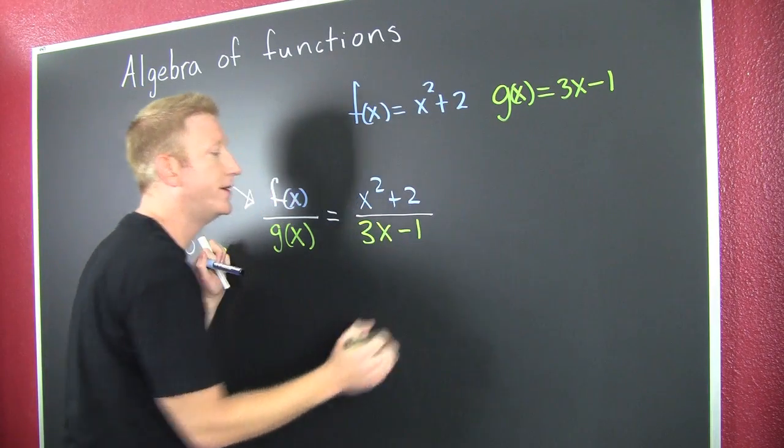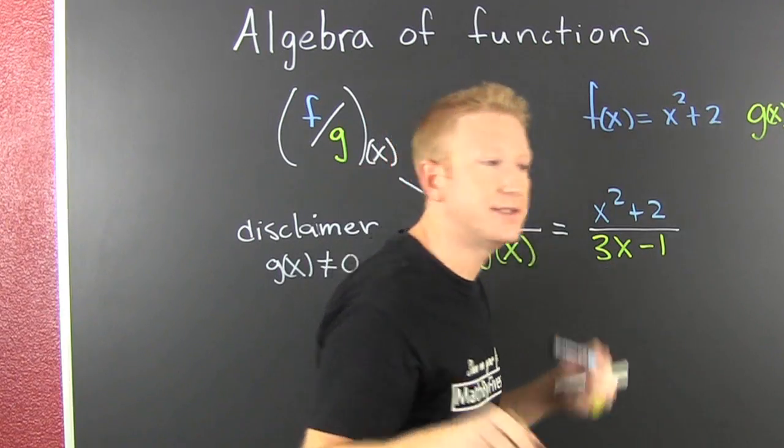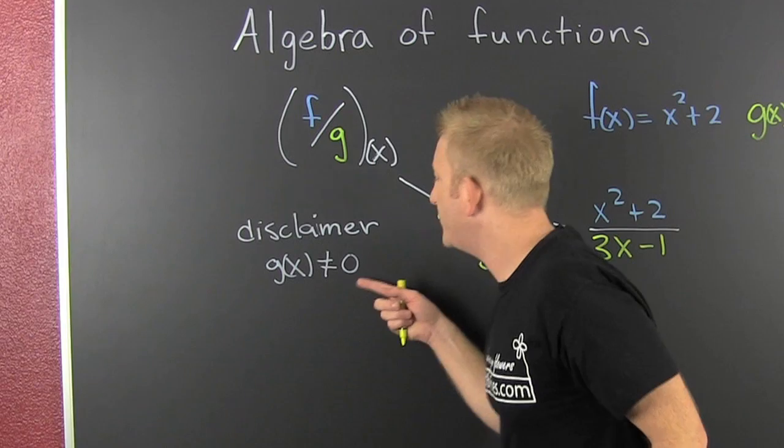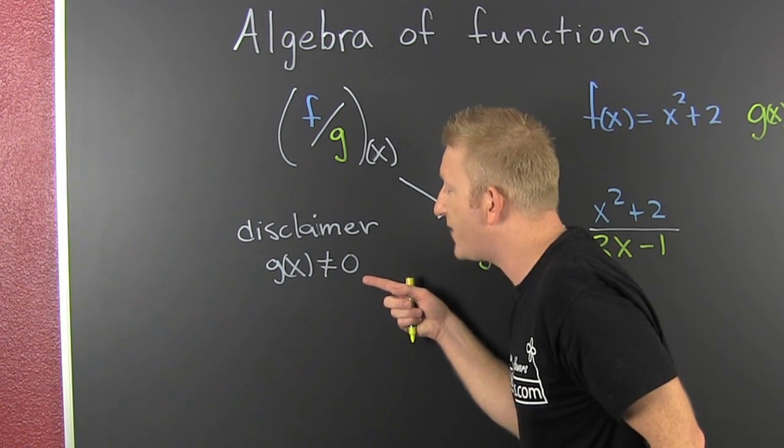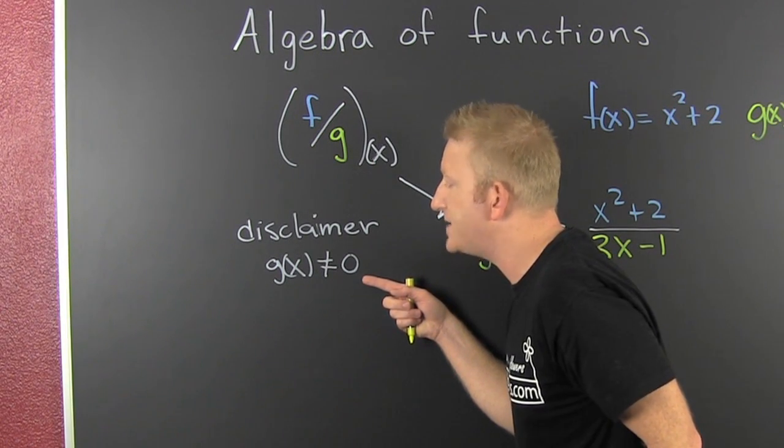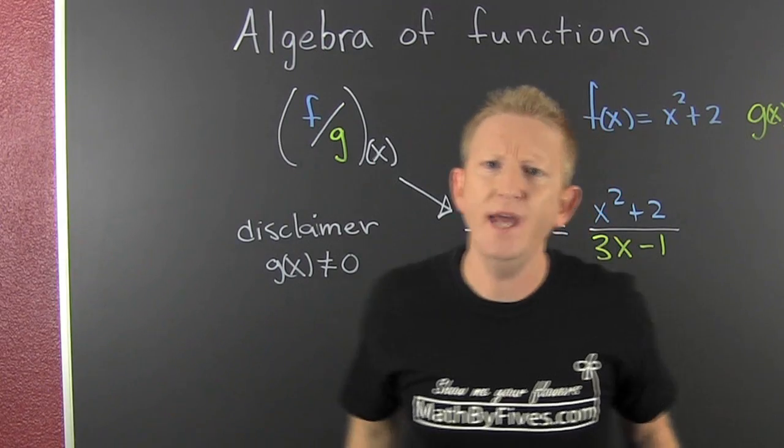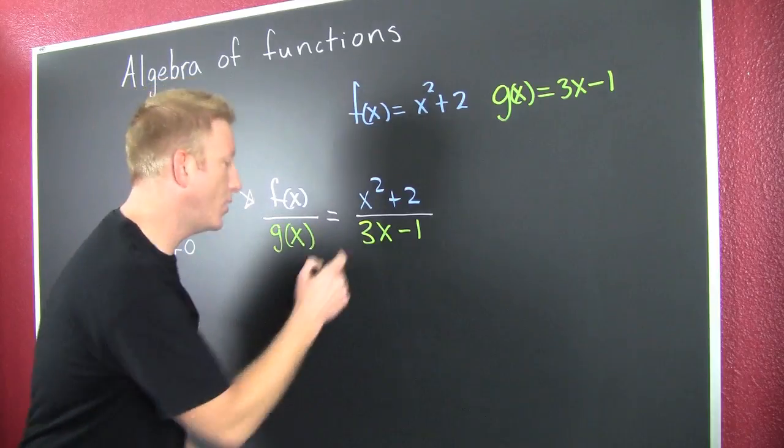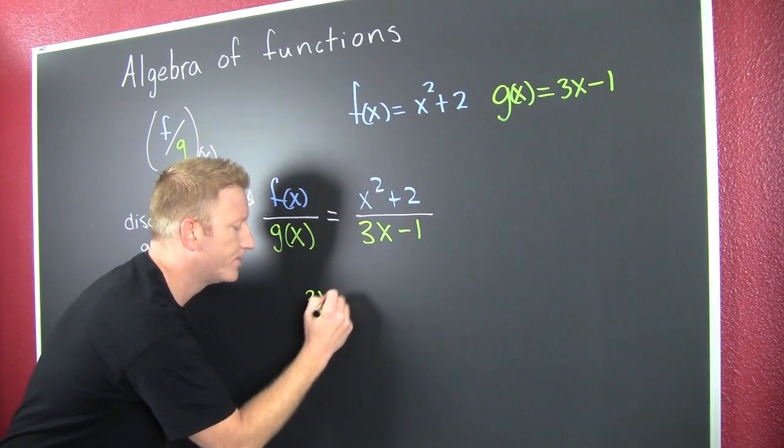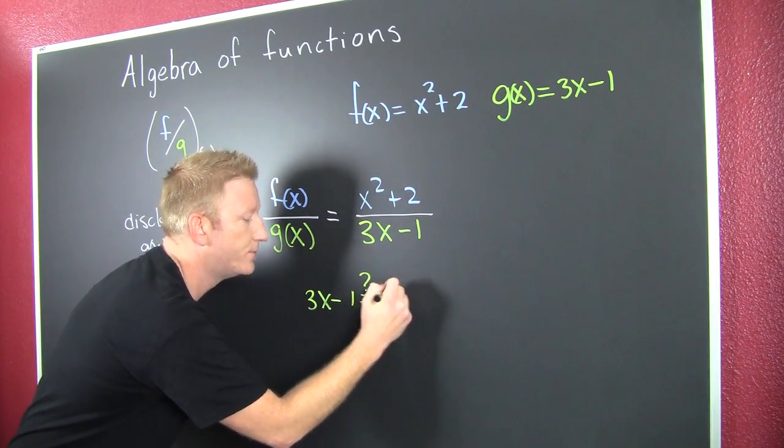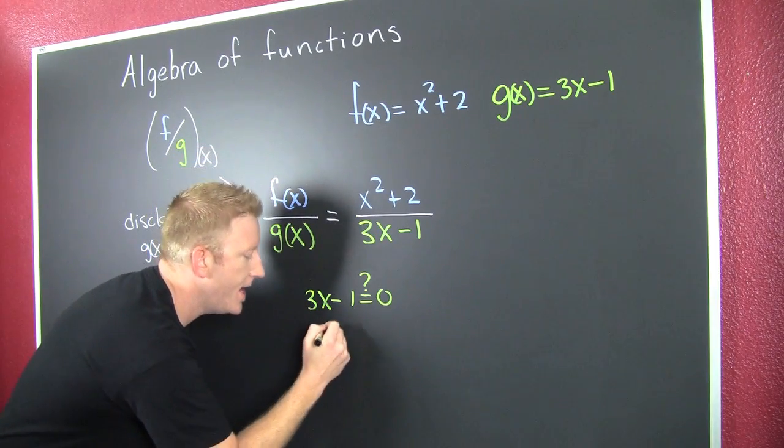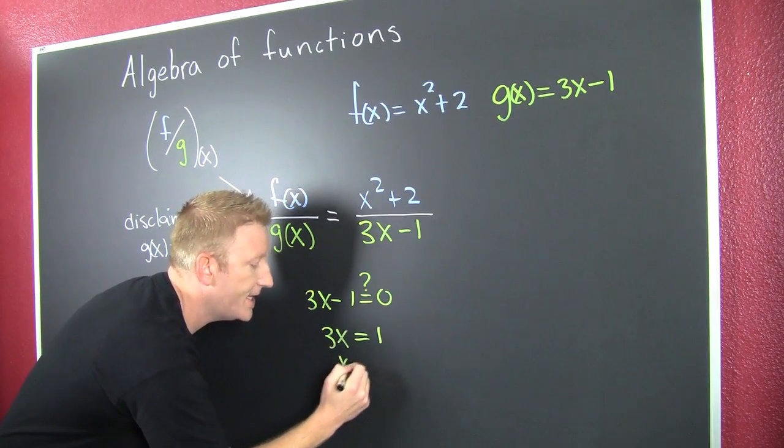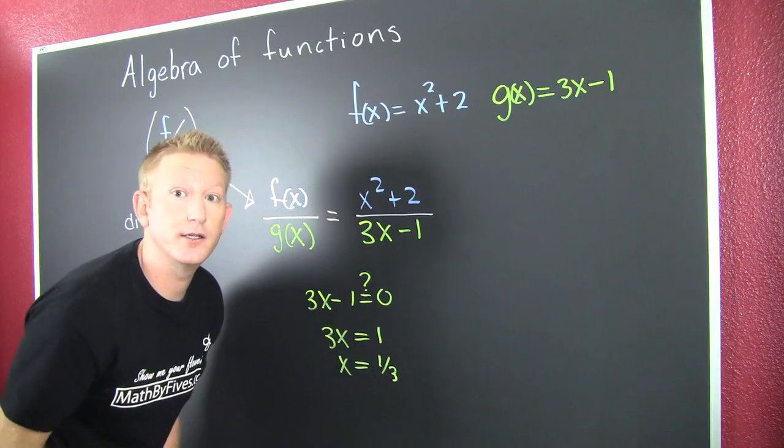But wait, there's more. This one comes with a disclaimer. You can never divide by zero. You can never divide by zero. You can never divide by zero. So we have to list where that denominator is equal to zero. Denominator, where are you equal to zero? And then that's a 3x is equal to a 1, and then x is 1/3.